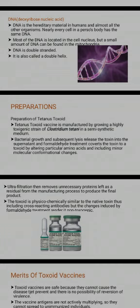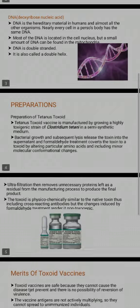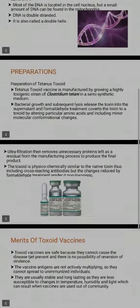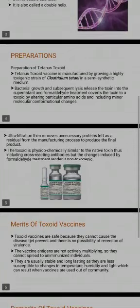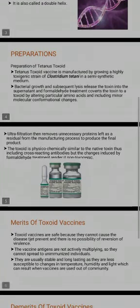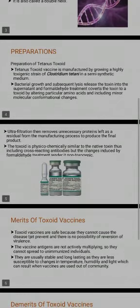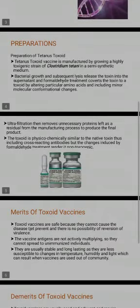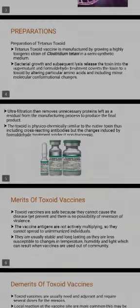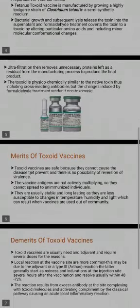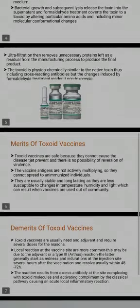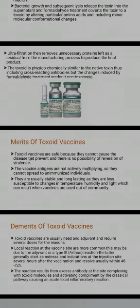Preparations of Toxoid: Tetanus toxoid vaccine is manufactured by growing a highly toxogenic strain of Clostridium tetani in a semisynthetic medium. Bacterial growth and subsequent lysis releases the toxin into a supernatant, and formaldehyde treatment converts the toxin into a toxoid by altering particular amino acids and inducing minor molecular conformational changes. Ultrafiltration then removes unnecessary proteins left as residual from the manufacturing process to produce the final product.